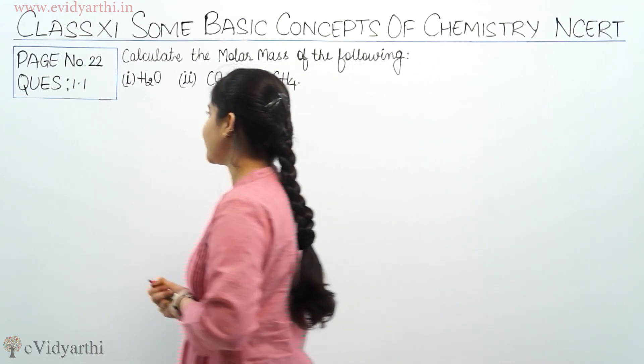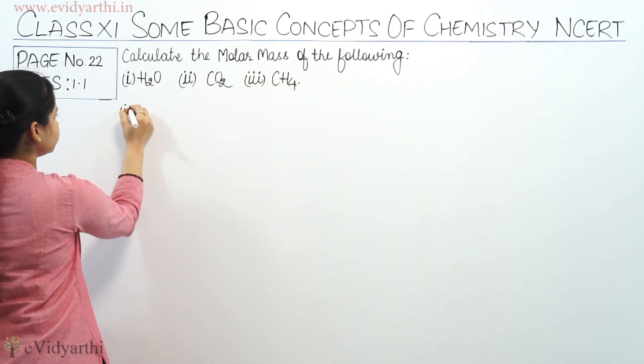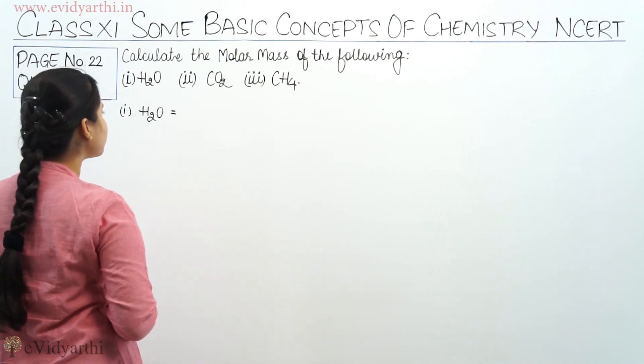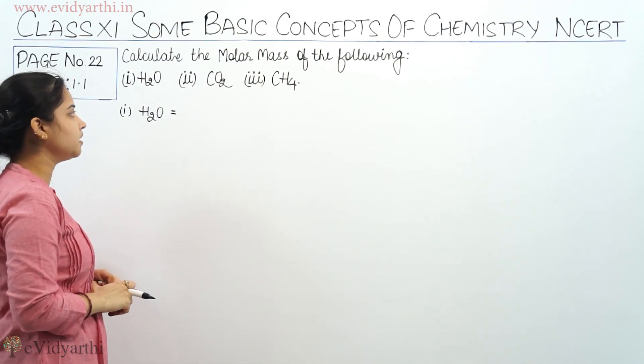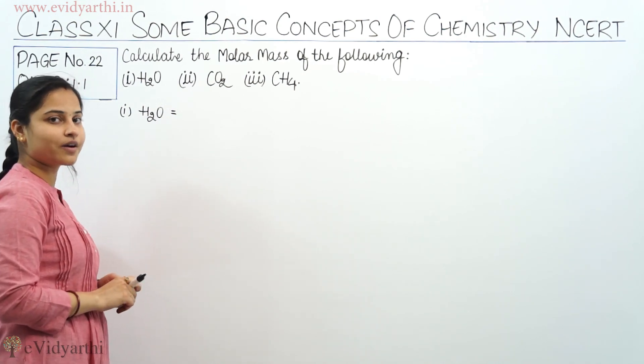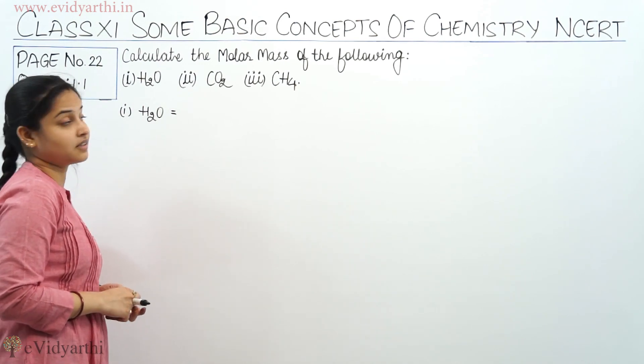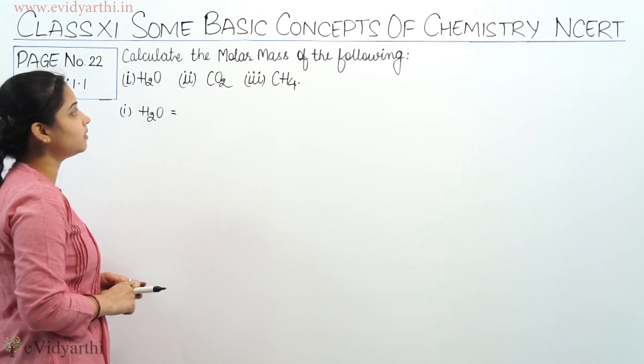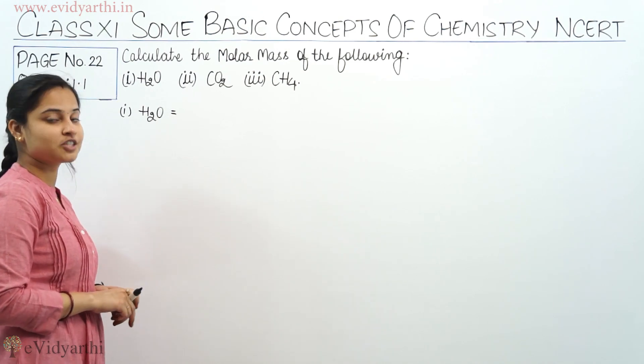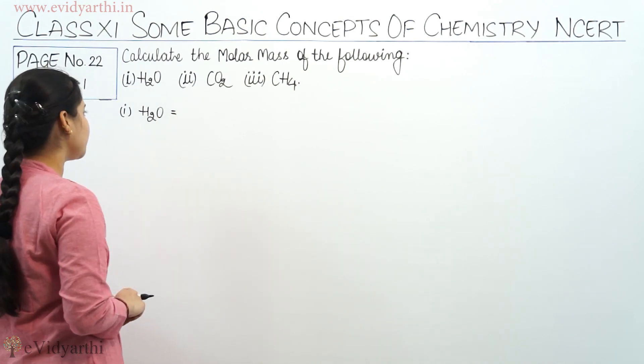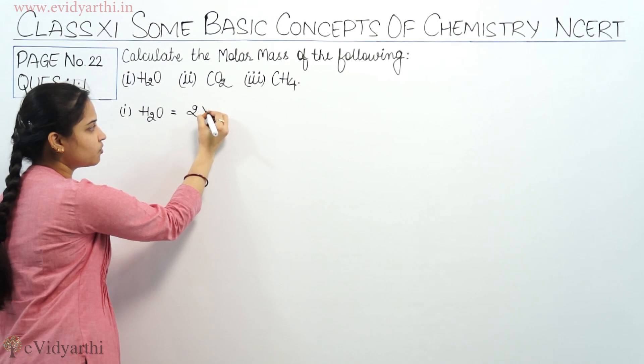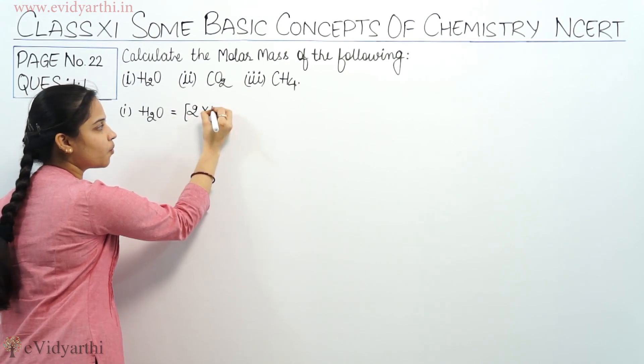So let's begin with the first part, that means H2O. I hope the atomic masses related to the particular atoms are known to you all, as they were in your class 9-10. It's very easy now to calculate the molar mass of the following compounds knowing the atomic masses of these elements or atoms. First of all, H2O. So obviously I am having two atoms of hydrogen, and what is the atomic mass of hydrogen? It is 1 atomic mass unit.